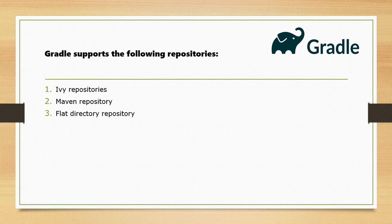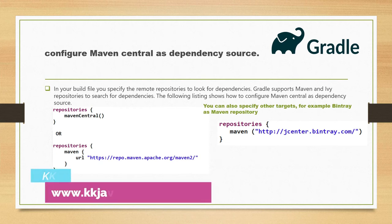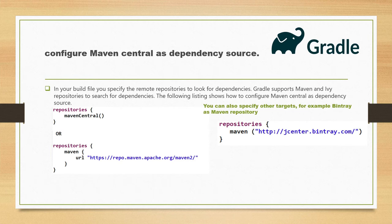Gradle supports the following repository types: Ivy repository, Maven, and flat directory repository. Let's understand how we can specify these three repositories in build.gradle. Gradle also supports Maven repository — in your build file you can specify the remote repository to look for dependencies. Gradle supports both Maven and Ivy repositories to search for dependencies.